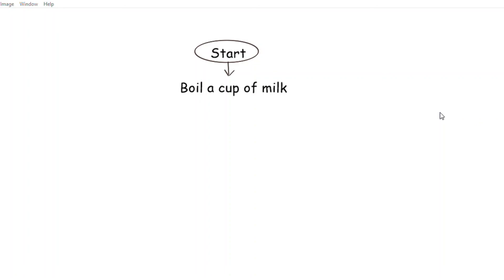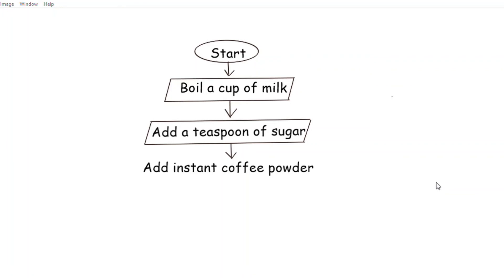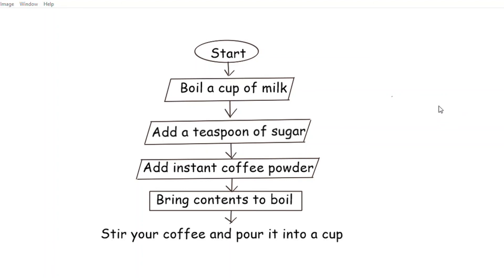Step 1: Start — make the symbol. Step 2: Boil a cup of milk — make the symbol. Step 3: Add a teaspoon of sugar — make the symbol. Step 4: Add instant coffee powder. Step 5: The processing step — bring contents to boil — make the symbol for the processing step.